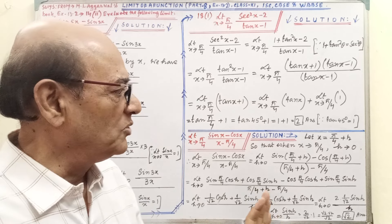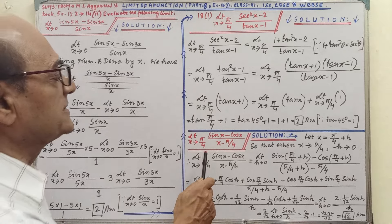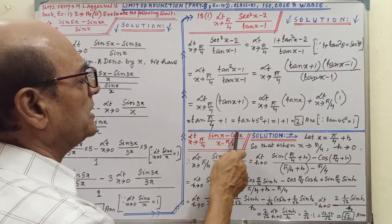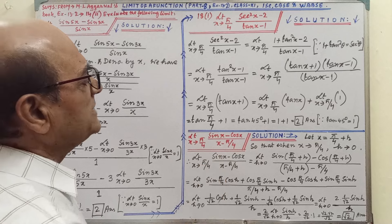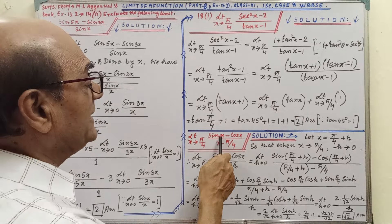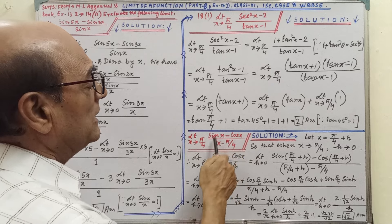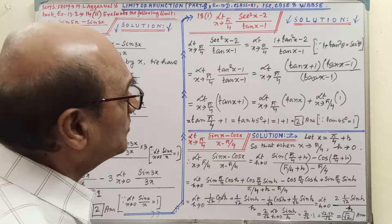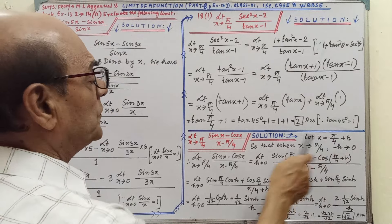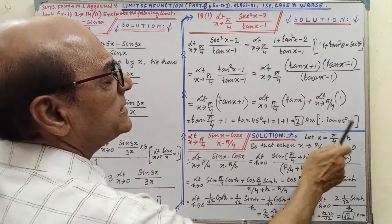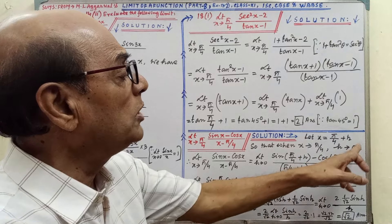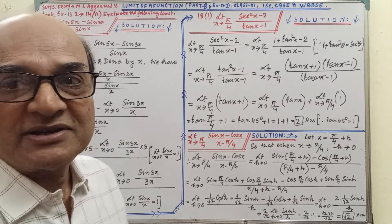By looking at the steps, you will easily understand. Next sum — you have to pay your full attention. This is a little bit different from what you have learned previously. Sin x minus cos x — this is not in the frame of the formula. Sin C minus sin D, cos C minus cos D have formulas, but sin x minus cos x is not in that form; we cannot directly express the expression using those formulas. This is why, see the process: let x equal to pi by 4 plus h, where h is a small increment. So as x tends to pi by 4, h tends to 0. This is the process you have to remember.